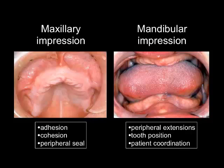For a maxillary denture, we depend on forces of adhesion, cohesion, and peripheral seal. In other words, we depend on the upper denture to kind of have suction and to seal itself into place.